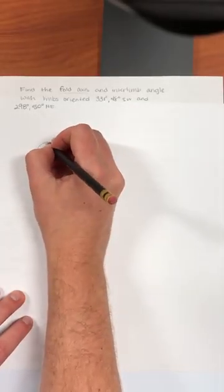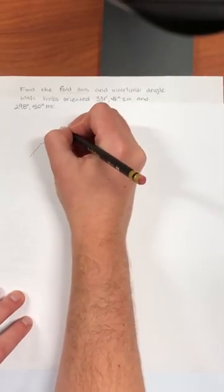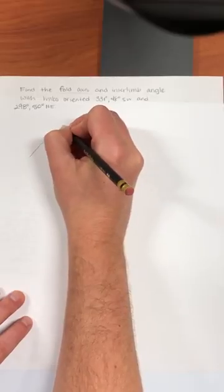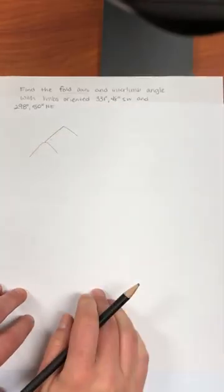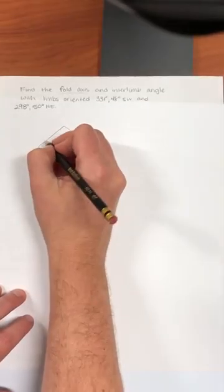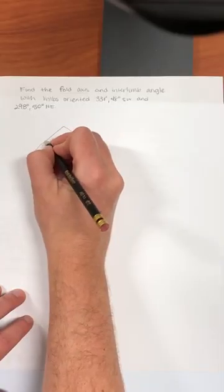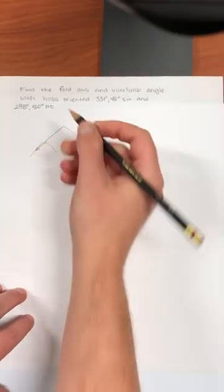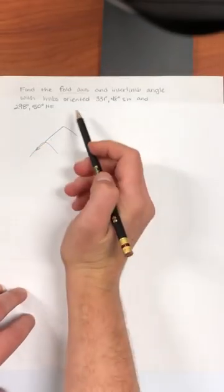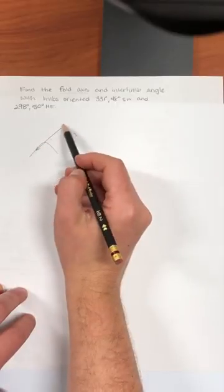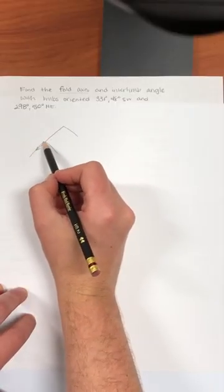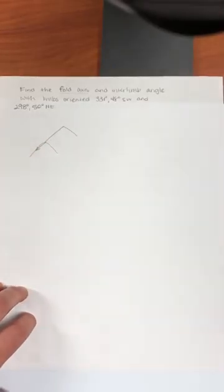So I'm going to draw an idealistic fold. We're seeing it in 3D. The fold axis is the top line going across the top hinge of the fold. The two limbs meet at the fold axis and the fold axis is a line.